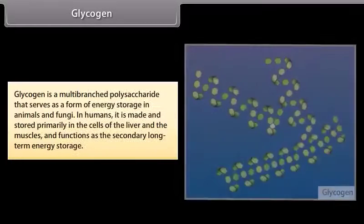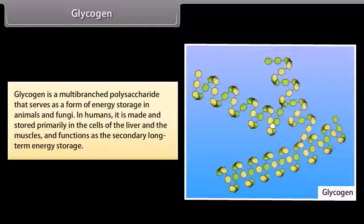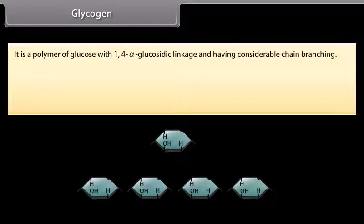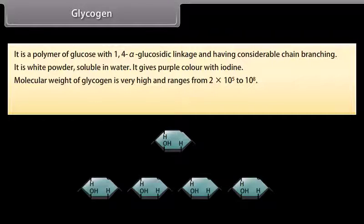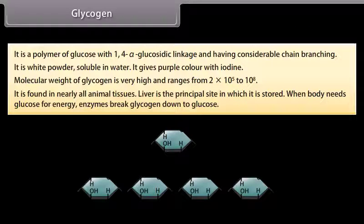Glycogen is a multi-branched polysaccharide that serves as a form of energy storage in animals and fungi. In humans, it is made and stored primarily in the cells of the liver and muscles and functions as the secondary long-term energy storage. It is a polymer of glucose with 1,4-alpha-glucosidic linkage and considerable chain branching. It is a white powder, soluble in water, and gives a purple color with iodine. Its molecular weight is very high, ranging from 2×10⁵ to 10⁸. It is found in nearly all animal tissues; the liver is the principal site of storage. When the body needs glucose for energy, enzymes break glycogen down to glucose.